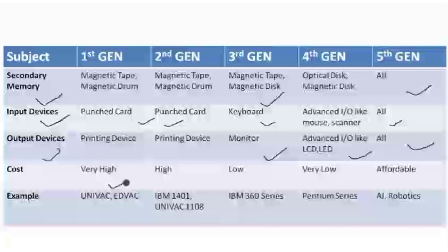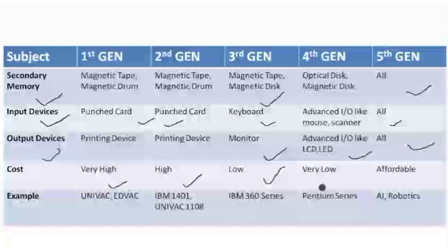Now looking at cost: the first generation was very expensive because a lot of hardware was used. The second generation was less expensive than that. The third generation had low cost, the fourth generation had very low cost, and the fifth generation is considered to have an affordable cost.